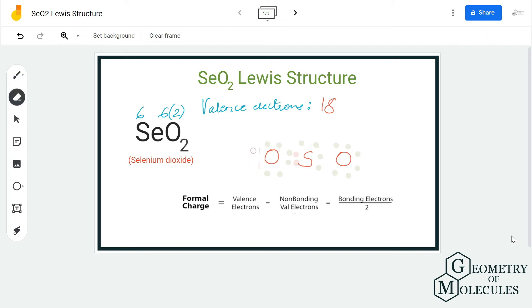Now to check if this structure is relevant, you can calculate the formal charges. Doing that, you will find that selenium has a plus one charge and oxygen has a minus one charge. In Lewis structures we try to attain a structure in which atoms have formal charges as close to zero as possible.